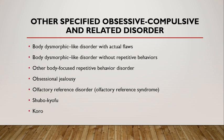Olfactory reference disorder is characterized by the individual's persistent preoccupation with the belief that he or she emits a foul or offensive body odor that is unnoticeable or only slightly noticeable to others. In response to this preoccupation, individuals often engage in repetitive and excessive behavior such as repeatedly checking for body odor, excessive showering, or seeking reassurance, as well as excessive attempts to camouflage the perceived odor. These symptoms cause clinically significant distress or impairment in social, occupational, or other important areas of functioning. In traditional Japanese psychiatry, this disorder is known as Jiko-shu-kyofu, a variant of Taijin Kyofusho — a culture-specific psychiatric disorder.